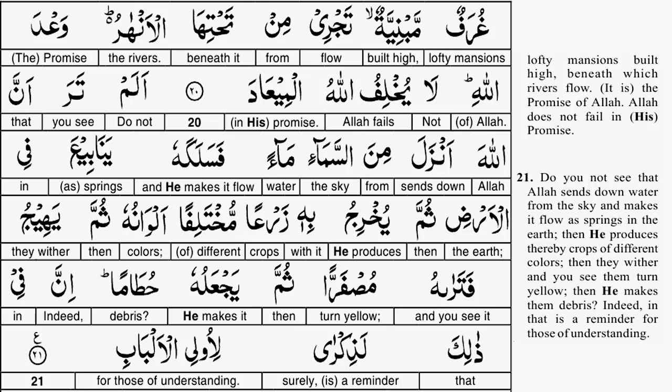Yanabi'a is a plural of yanbu'a, and yanbu'a is a spring. As the water infiltrates the earth's surface it becomes part of the groundwater. And the groundwater, as it increases in volume, travels through a network of cracks and fissures and eventually emerges in the form of springs. Spring water is naturally filtered water because it goes through layers of soil.